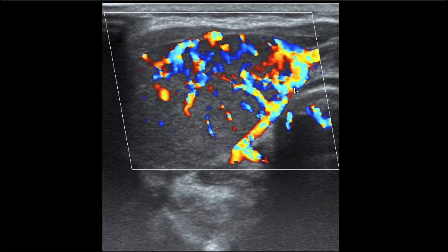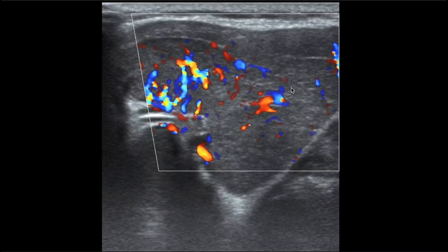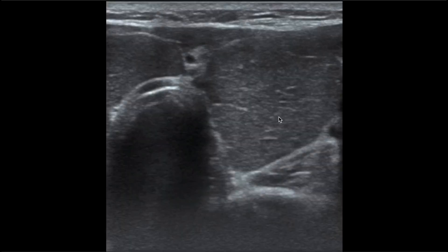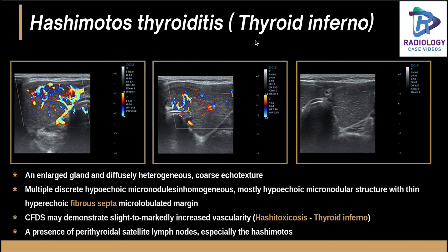Coming to another case: this is a USG image of the thyroid showing intense vascularity. The patient was in a hyperthyroid state, and fibrous septa are visible within the gland. This is a diffusely hypoechoic thyroid with fibrous septa — a classical case of Hashimoto's thyroiditis in the thyroid inferno stage. Normally, Hashimoto's presents with hypothyroidism, but it can have increased vascularity and present as Hashi-toxicosis. Biopsy confirmed Hashimoto's thyroiditis. Finding fibrous septa is important in chronic phases, and numerous hypoechoic nodules and perithyroidal satellite lymph nodes may also be seen.